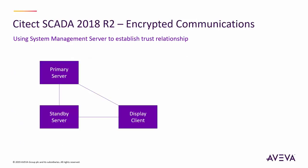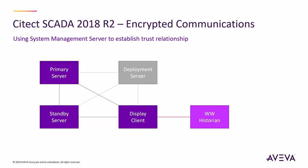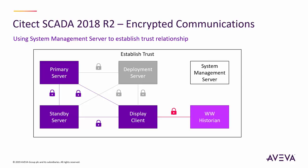By way of example, a standard redundant configuration with a primary and secondary server pair, a remote client, a historian, and a deployment server can now easily be encrypted with the addition of a system management server. This facilitates the creation and deployment of certificates to establish a trust relationship between all system nodes.